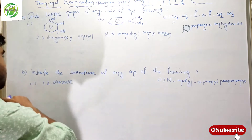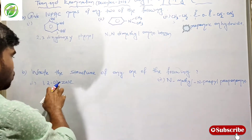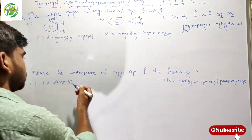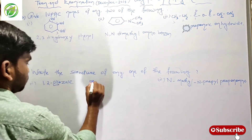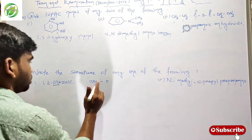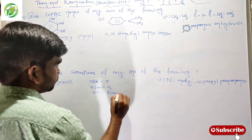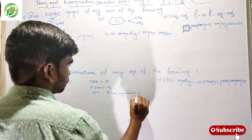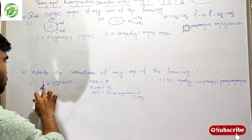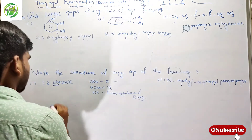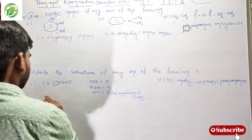Let's go to the next question. This is question number 1b — draw the structure of any one of the following. This is 1,2-oxazole. You remember: 'ox' is used for oxygen, 'az' is used for nitrogen, and 'ole' is for a 5-membered ring, 'ine' for a 6-membered ring. So 1,2-oxazole has oxygen and nitrogen in a 5-membered ring. When we write the structure, oxygen is most important.